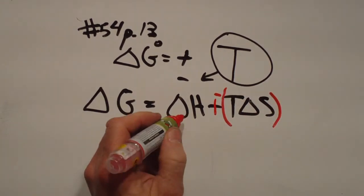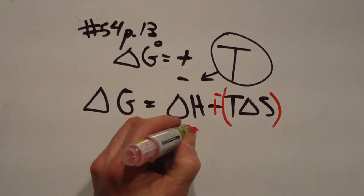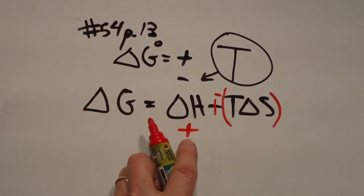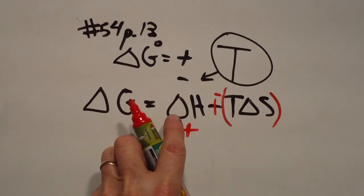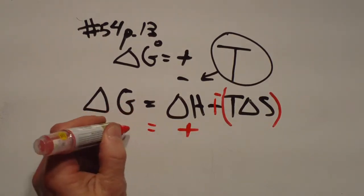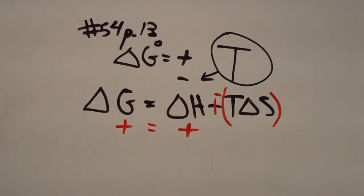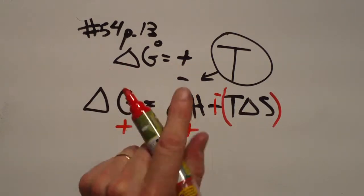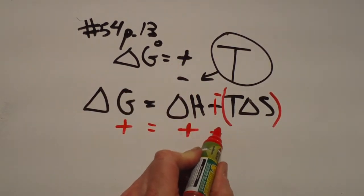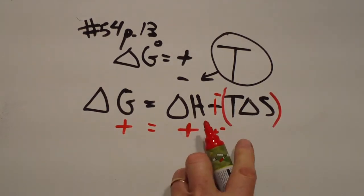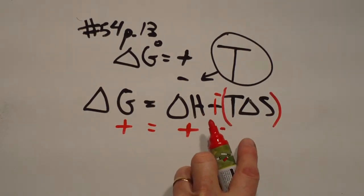The delta H has got to begin at least positive, and it'll always be positive. Once it's positive, the temperature doesn't affect the delta H at all. And since we're starting out with a positive delta G, like it says here, we realize that we're going to add that to a negative term, but this term here has to be smaller than this.